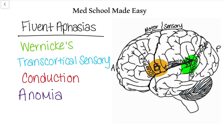Wernicke's aphasia is when that part of the brain gets taken out, so comprehension is eliminated. Another important thing to always test is whether a patient can repeat, because that will differentiate some of these aphasias. You need both Broca's and Wernicke's areas to repeat something — you need to comprehend what's being said and be able to say words fluently. In Wernicke's aphasia, you cannot comprehend and you cannot repeat because Wernicke's area is taken out, but you are still fluent because Broca's area is intact.